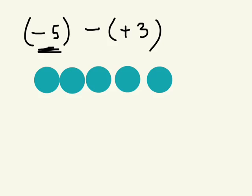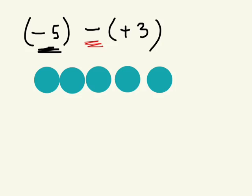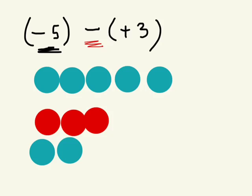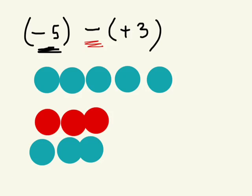And the question here says subtract from this, subtract three. Do we have three positives to take away? No. We don't, so what are we going to do? We're going to put three positives, but we have to pair them with three negatives so that we're not actually changing the question. So now, because these cancel out, right, we're not changing it.